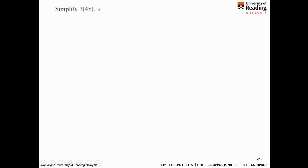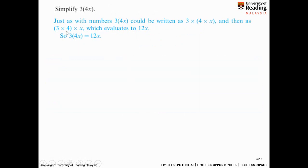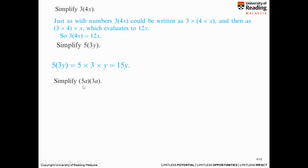Now you have a bracket: 3 times (4x) simply means 3 times 4x, which gives 12x. You don't have to show all the intermediate steps — you can just give the final answer. Similarly, 5 times (3y) gives 15y. For 5a times 3a, multiply the coefficients 5 and 3 to get 15, and a times a gives a squared, so the answer is 15a squared.